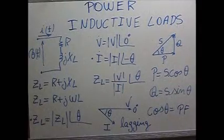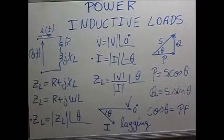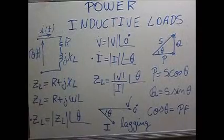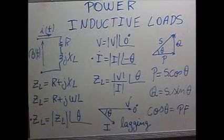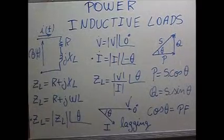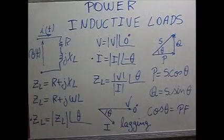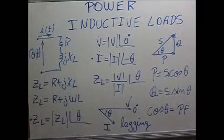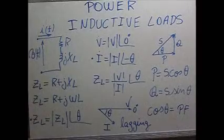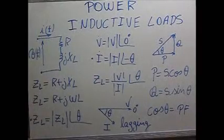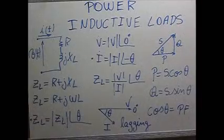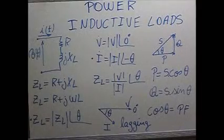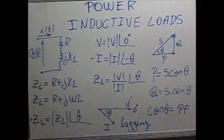Because let's divide V by I. By definition, ZL or any impedance is the ratio of voltage and current. If we divide V and I, what we get? The absolute value of V divided by the absolute value of I, zero minus minus theta. Zero minus minus theta equals theta. This is how we divide phasors in their polar forms.